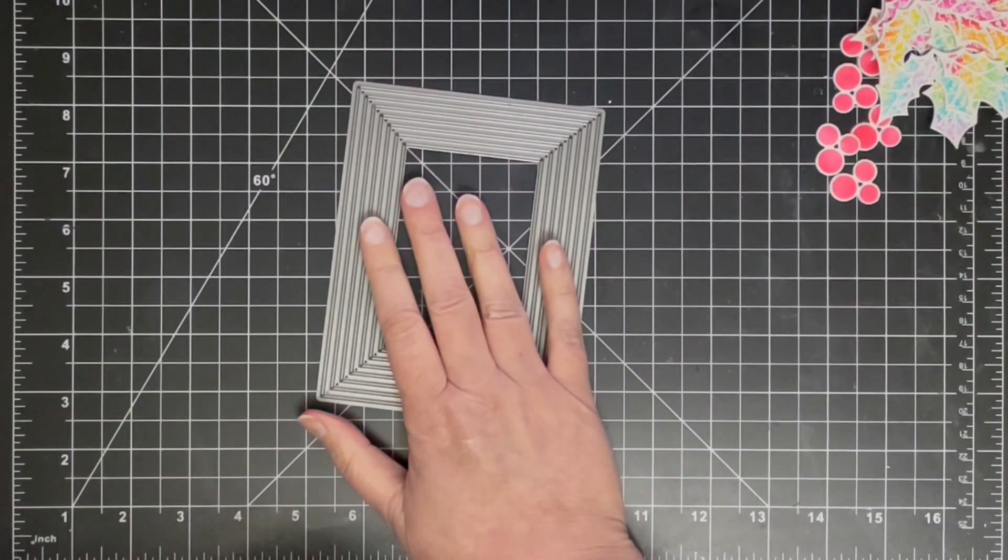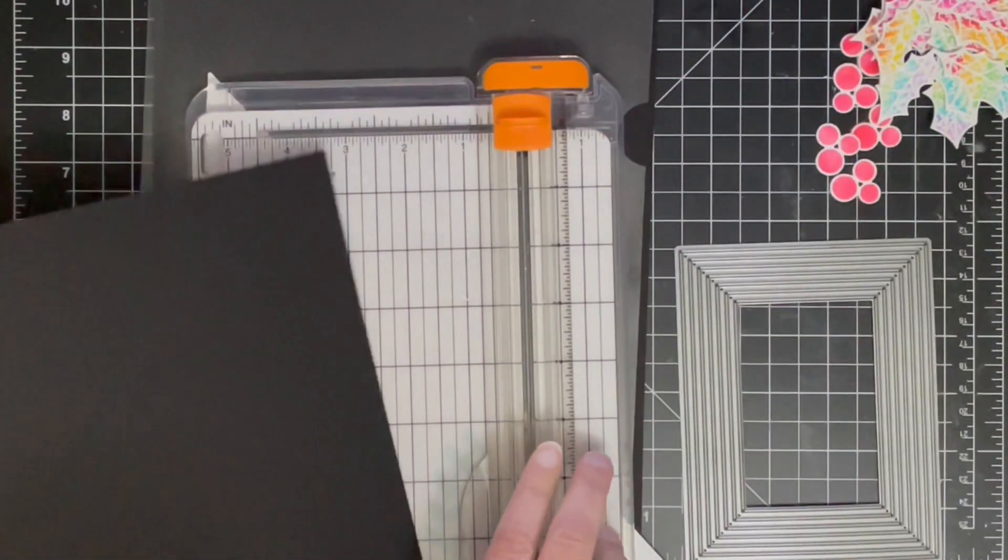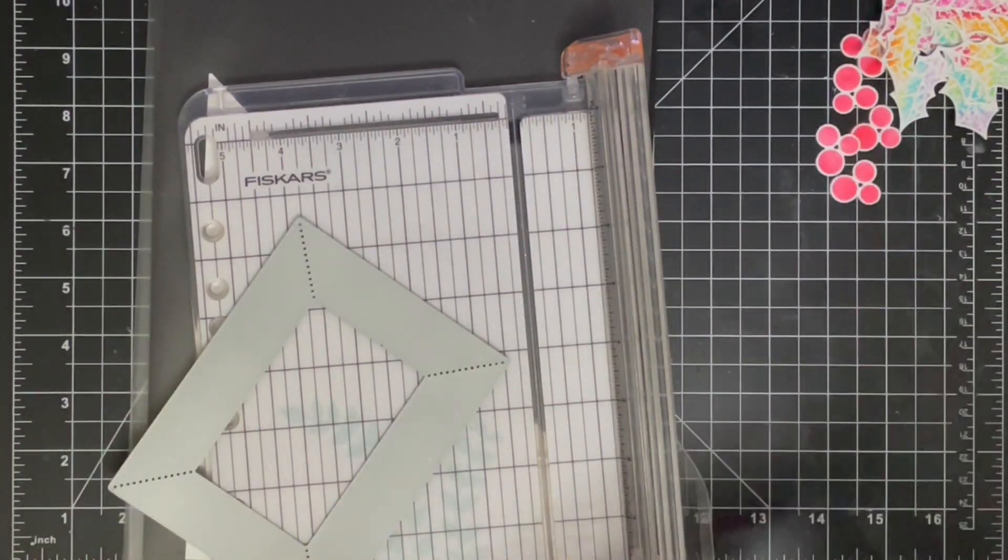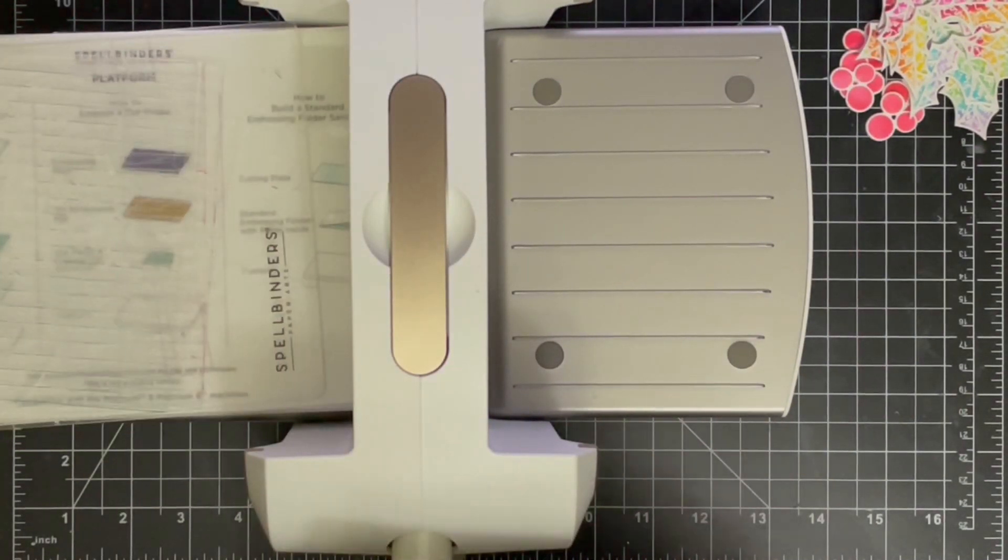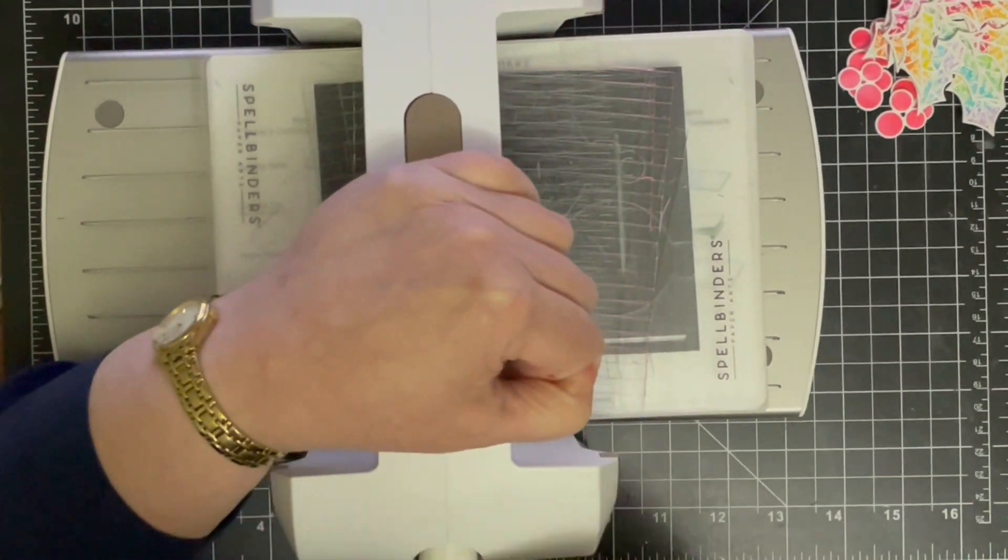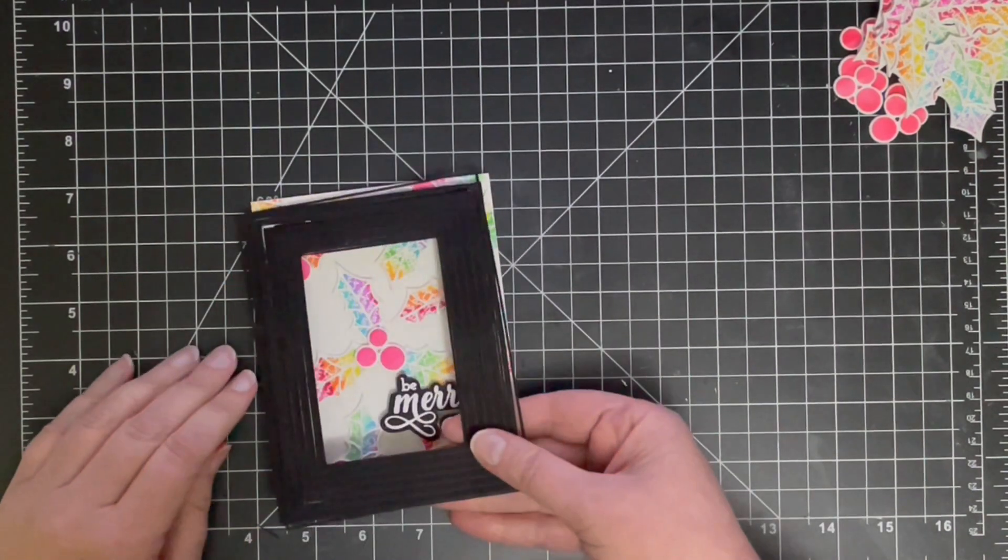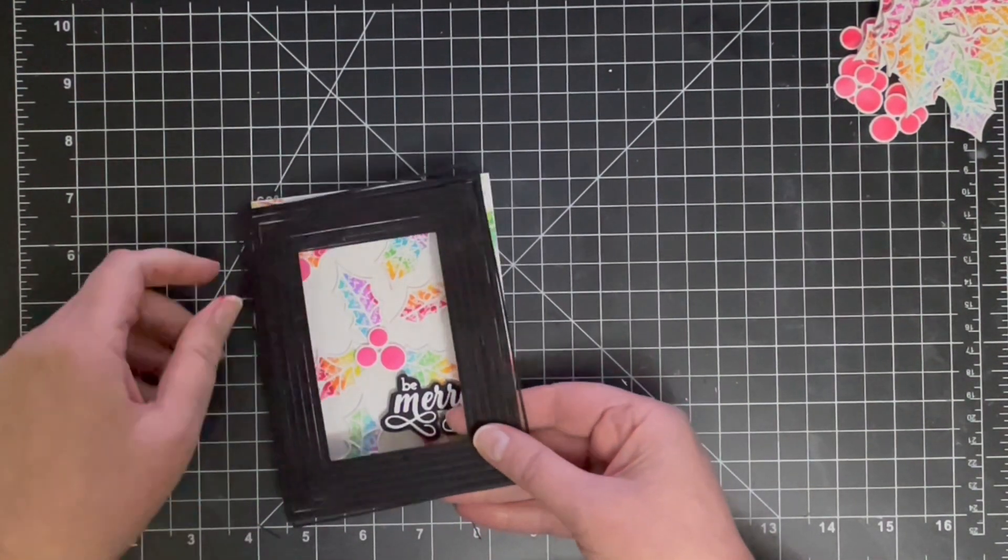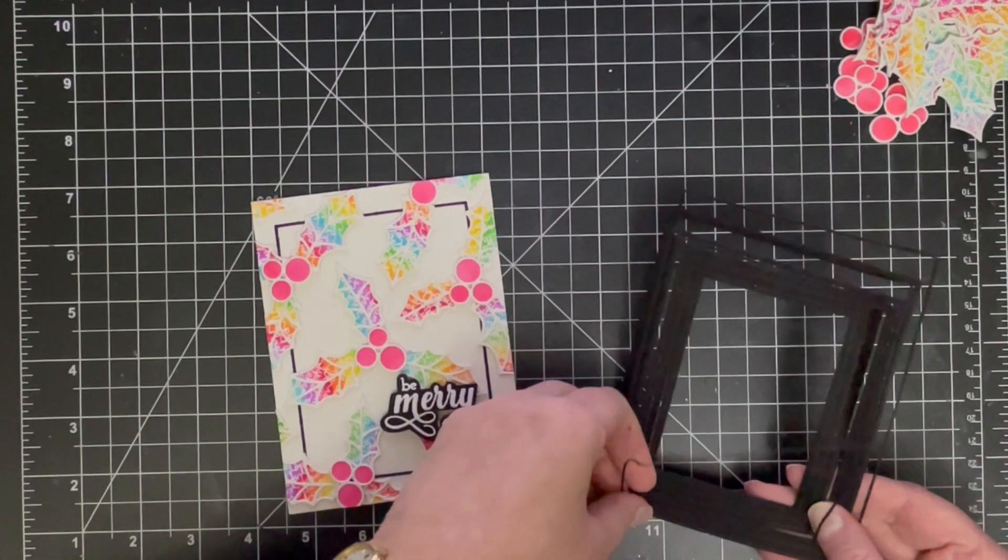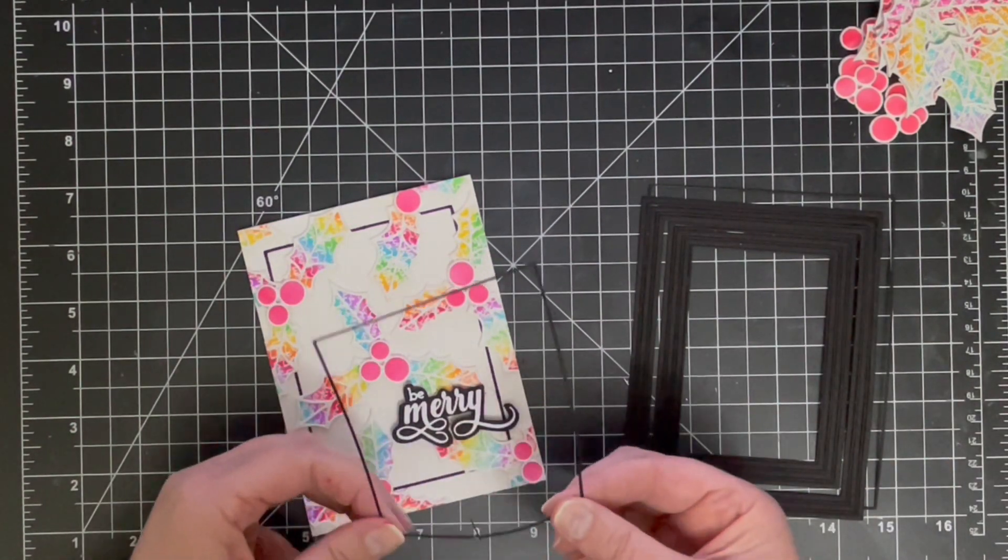All right, so I've now pulled out this frame die which is from Altenew and some Hero Arts black cardstock, which is my favorite black cardstock, because I decided to go a little bit away from Jennifer's card, because that's what casing is all about, is taking some inspiration from the card that you're casing but don't copy it directly. All right, so I've just pulled out my original card here just to decide which frame I wanted to use. So I'm going to be putting the rest of these frames into a little plastic folder so that if I ever need to use them again, I'll have them ready to go and I don't have to cut them out again.